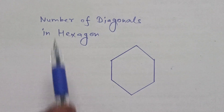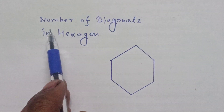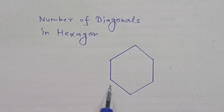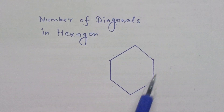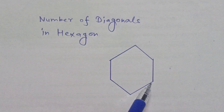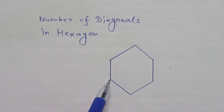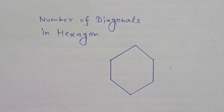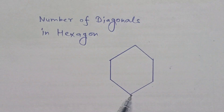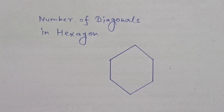The question is: find the number of diagonals in a hexagon. A hexagon has six sides and six vertices, and we know that any two vertices create a diagonal.